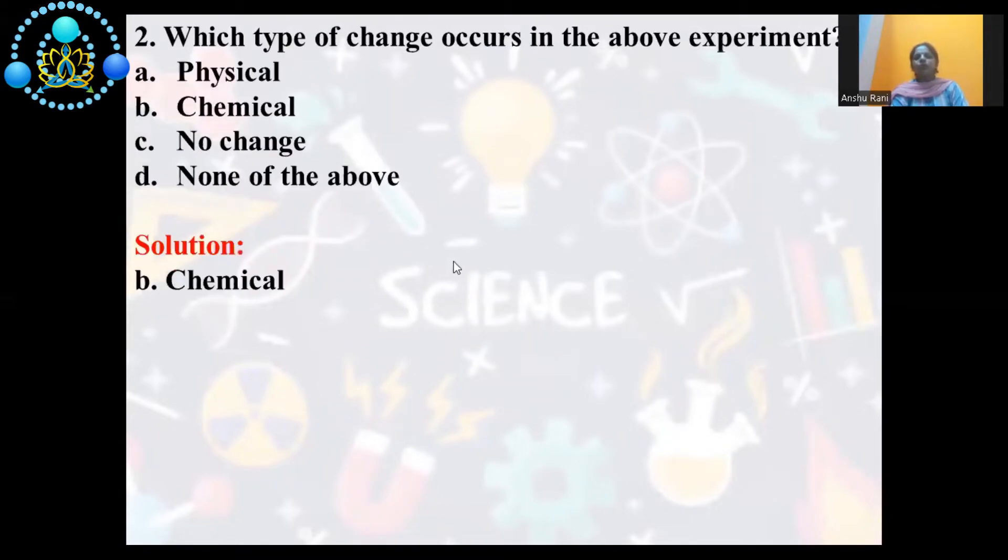Second question is, which type of change occurs in the above experiment? Burning is always a chemical reaction. It is a chemical change because a new substance is formed. The white ash, which is formed, can't be converted back to form magnesium ribbon.